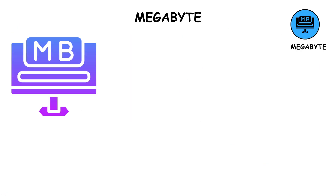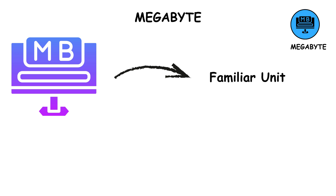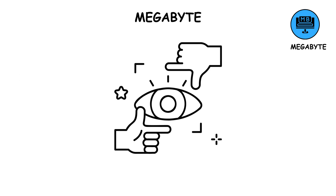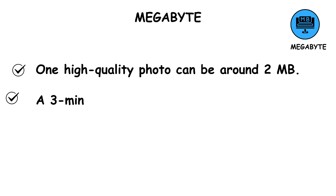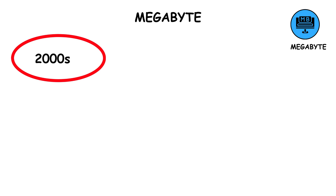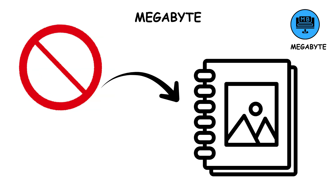A megabyte equals 1,024 kilobytes, or roughly 1 million bytes. The megabyte is a familiar unit — it's used to measure things like songs, photos, and small apps. To give you perspective, one high-quality photo can be around 2 megabytes. A 3-minute MP3 song is about 3 to 5 megabytes. A short PDF file might be 1 megabyte or less. In the early 2000s, when you bought a USB flash drive, it might have had just 128 megabytes of space. Today, that's barely enough for one HD photo album.